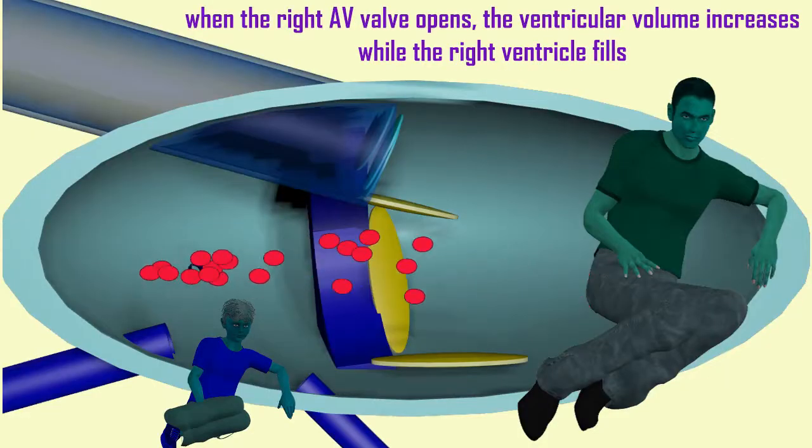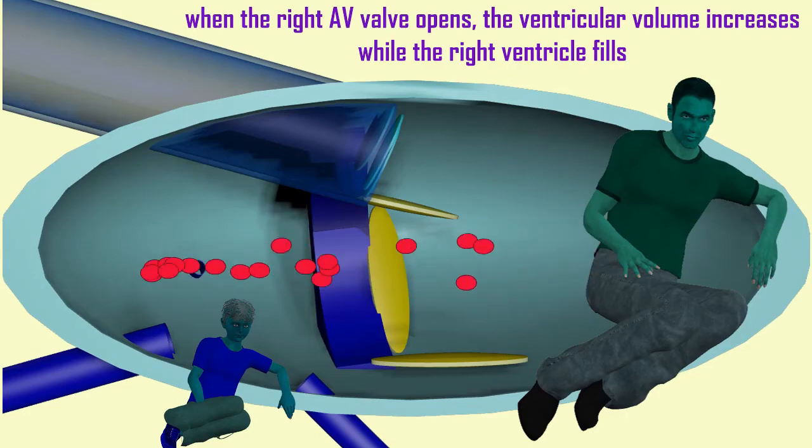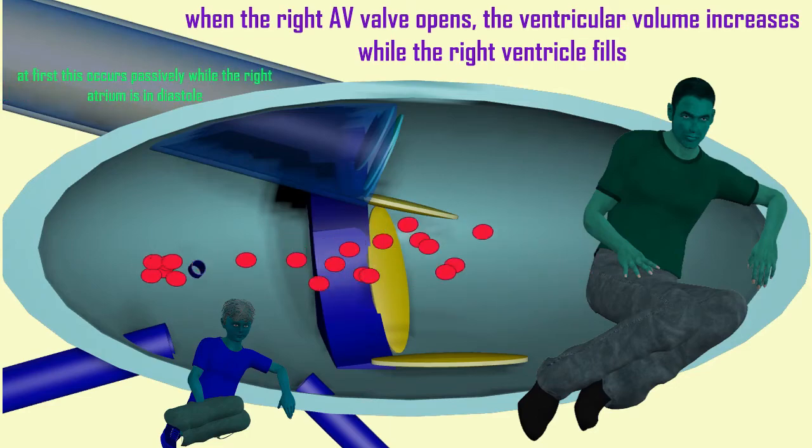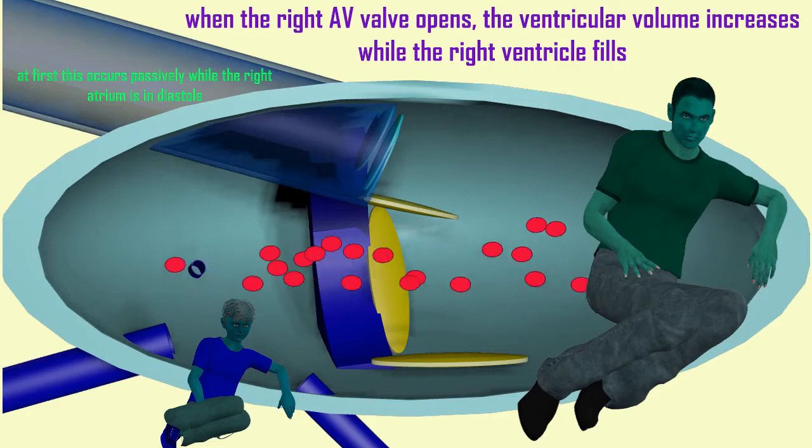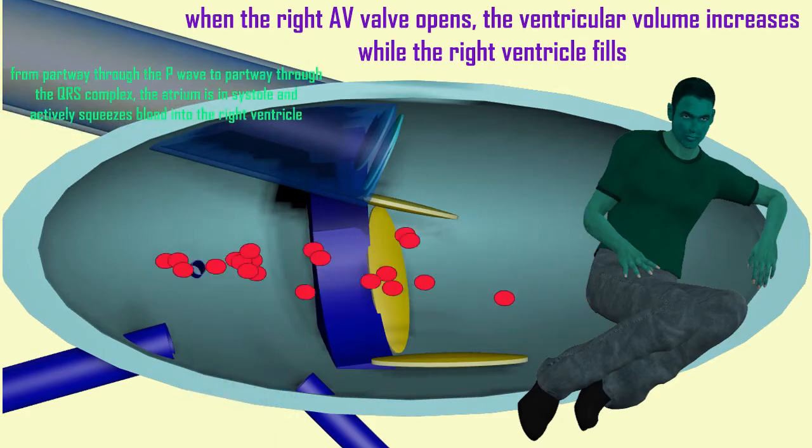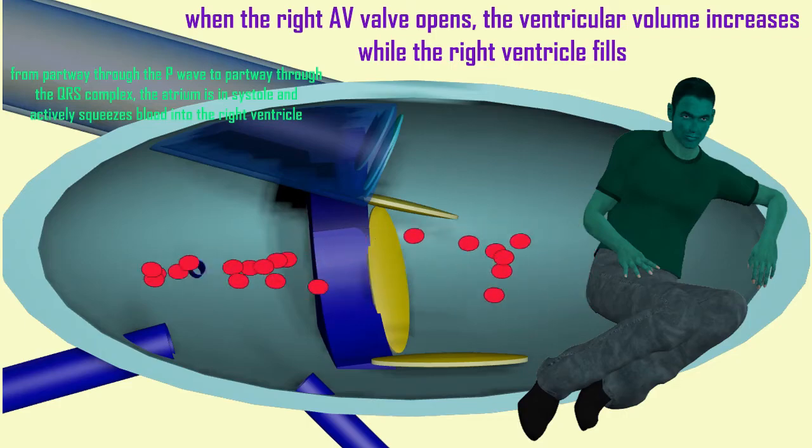Slowly at first, as blood simply passively passes from areas of high pressure to low pressure, but then actively when the myocardium of the atria undergoes systole to squeeze the last remaining amount of blood from the atria into the ventricles.